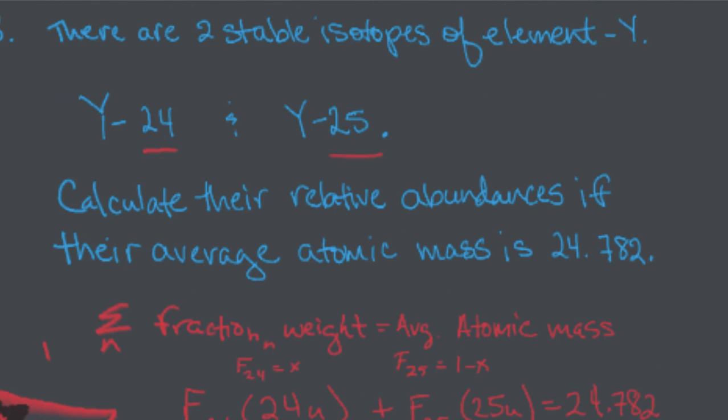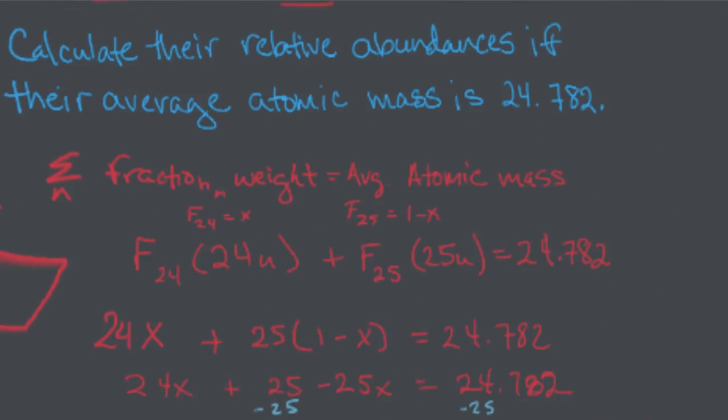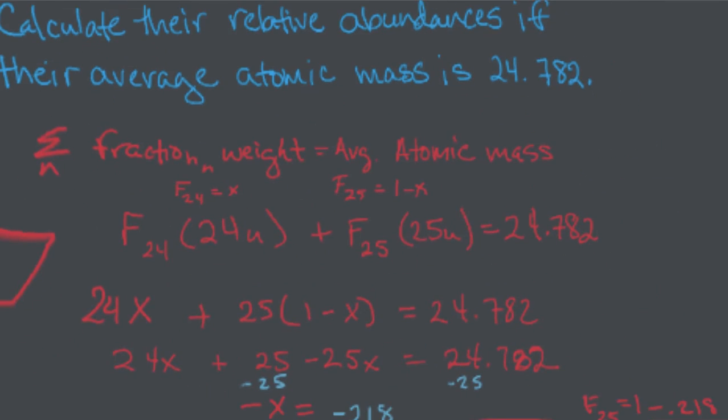Okay? So, again, what did we do? We did the fractions times the weights. We didn't know the fractions. So, we let one equal x. As a result, the other one equaled 1 minus x. Then, you distribute, combine your like terms, solve for x, and then do 1 minus that answer to get the other isotope abundance.